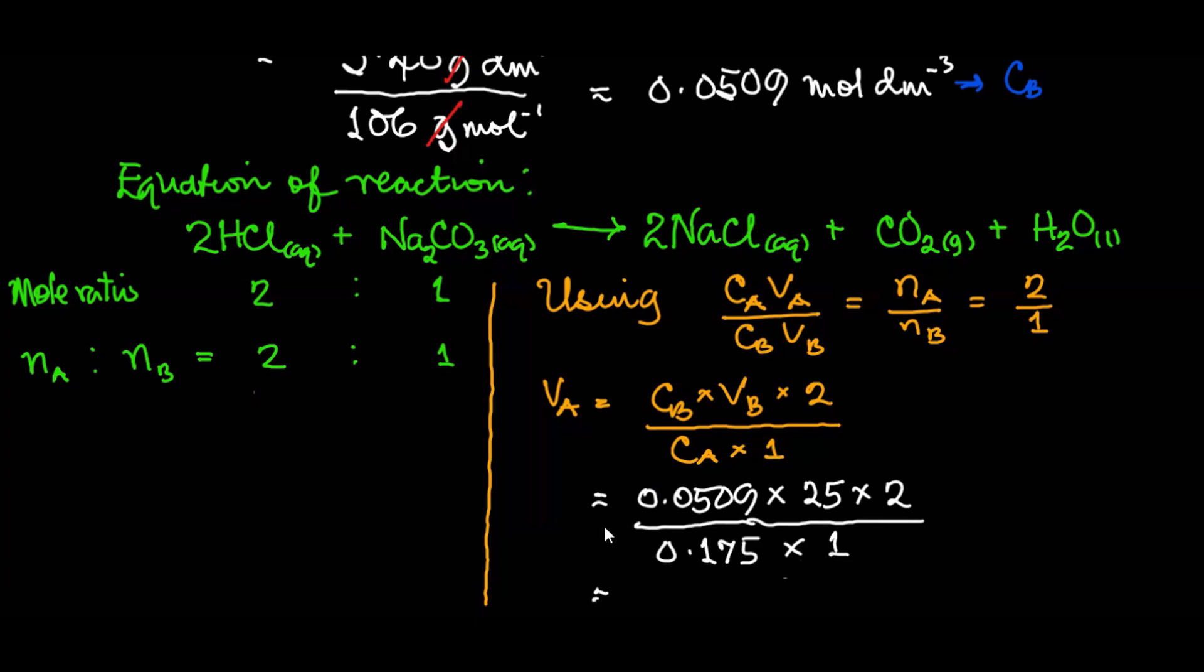So if we evaluate this that will give us 14.54 cm³ as the volume of the acid that will be required to neutralize the base. Therefore, I expect a titre value around 14.54 cm³.